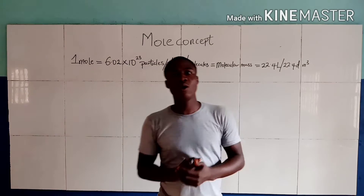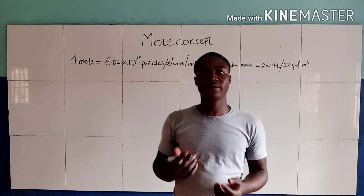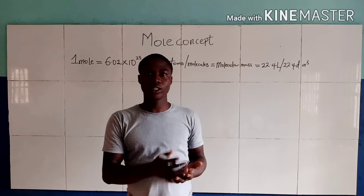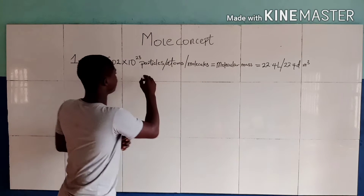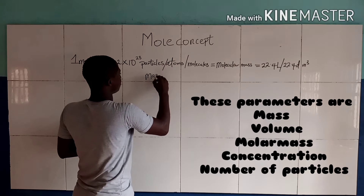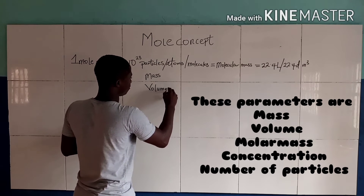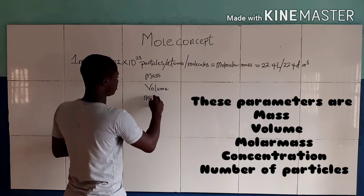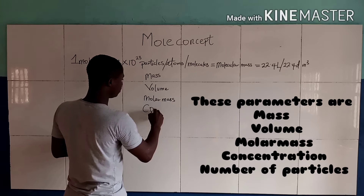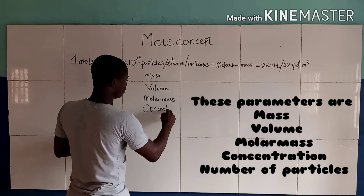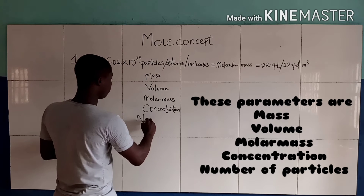The mole is the quantity of convenience used in quantitative chemistry to find out the relationships between various parameters like mass, volume, molar mass, concentration, and number of particles.